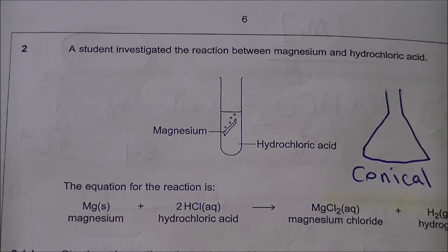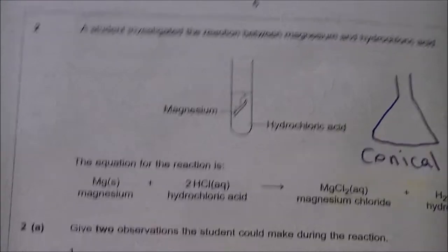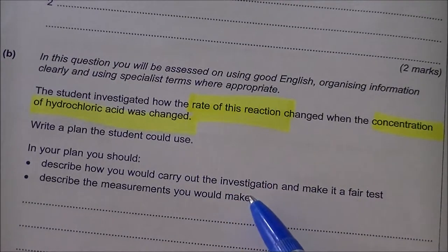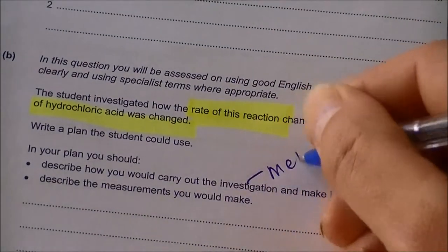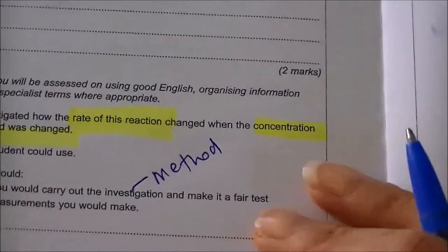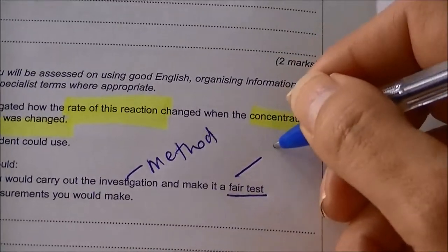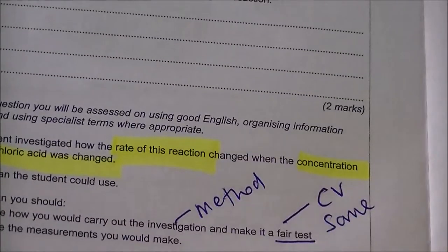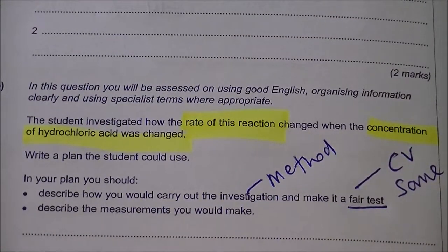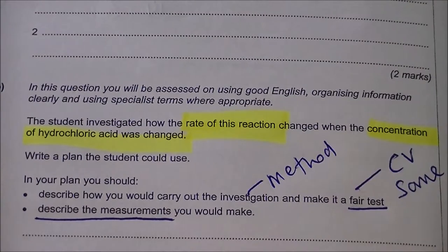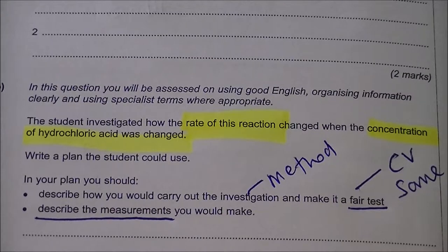We've got to look at the bullet points in the plan. It does say we have to describe how we're going to carry out the investigation — that is simply a step-by-step method. It doesn't have to be long, just needs to include those seven things we talked about. You're going to make it a fair test. As soon as you see that word, you should be thinking control variables — things that I am going to keep the same. And finally, what are you actually going to measure? If you follow my instructions, you're going to get full marks anyway.